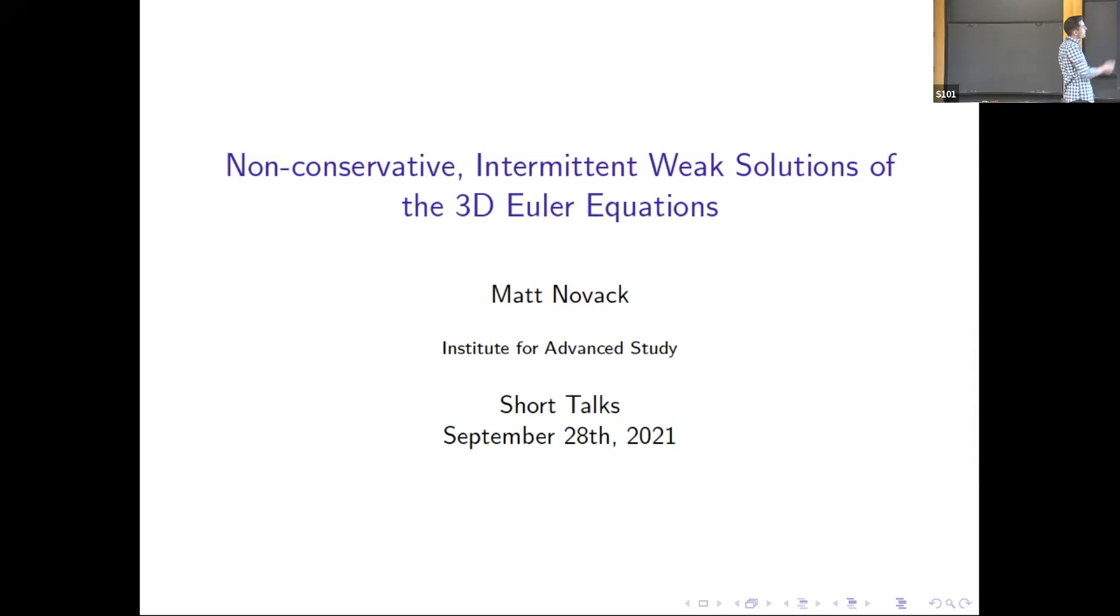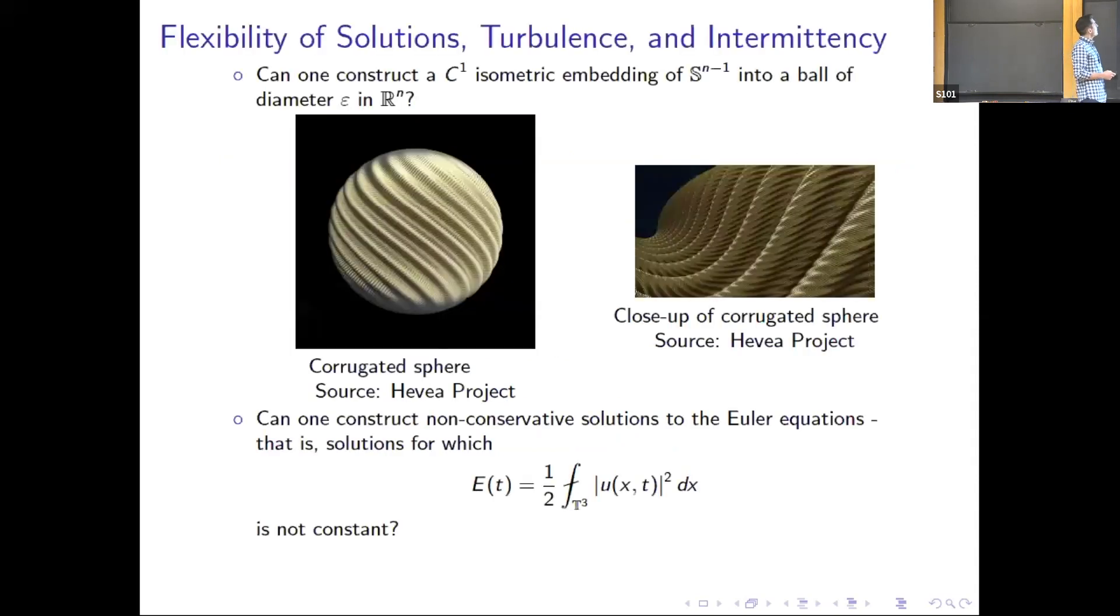Where these things sit at the intersection of these two fields. So I want to start by posing the following questions which you're likely familiar with. The first is the isometric embedding problem: can I take a sphere and find a C^1 isometric embedding into a ball of radius epsilon?